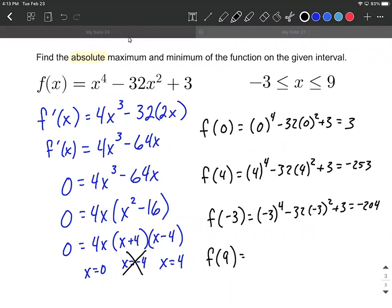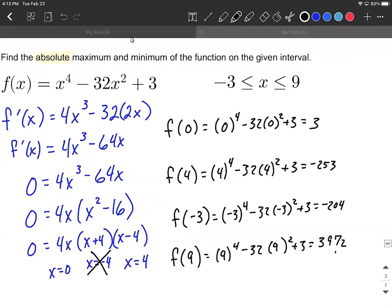And positive 9, 9 to the fourth power minus 32 times 9 squared plus 3. I got 3,972. All right, sorry. Very edge of the screen here.